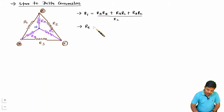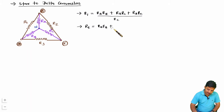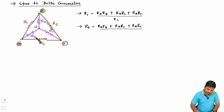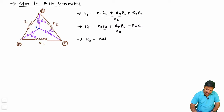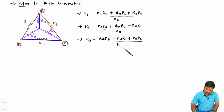For R2, you take the same numerator RA·RB + RA·RC + RB·RC and divide by the opposite resistor, which is RB. So R2 = (RA·RB + RA·RC + RB·RC) / RB. For R3, similarly divide the same numerator by RA, so R3 = (RA·RB + RA·RC + RB·RC) / RA.